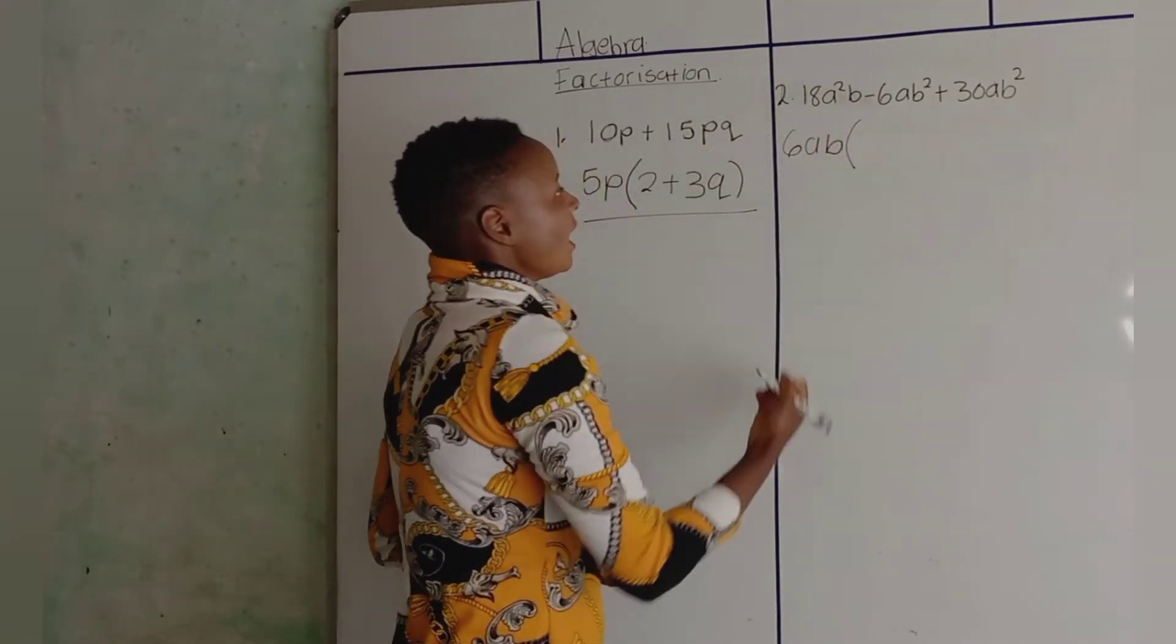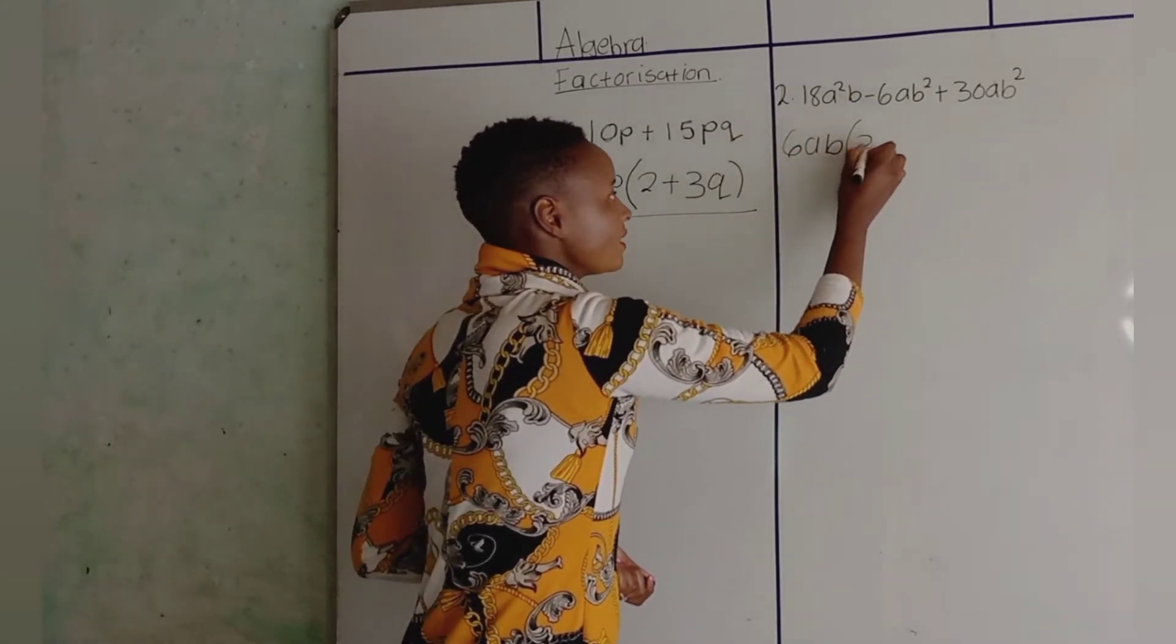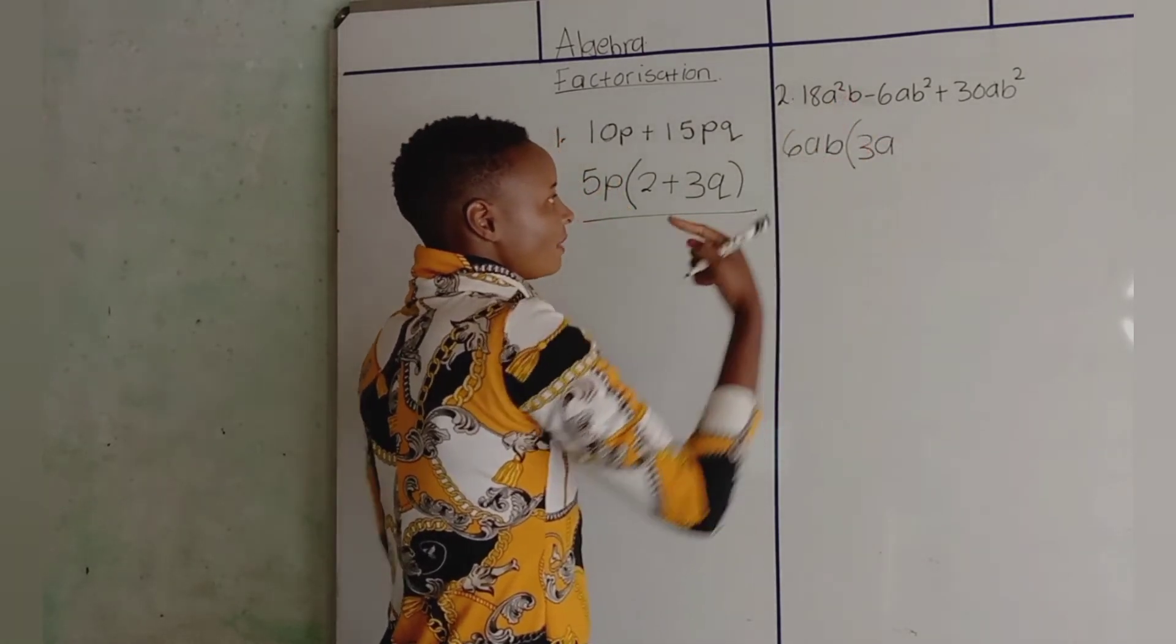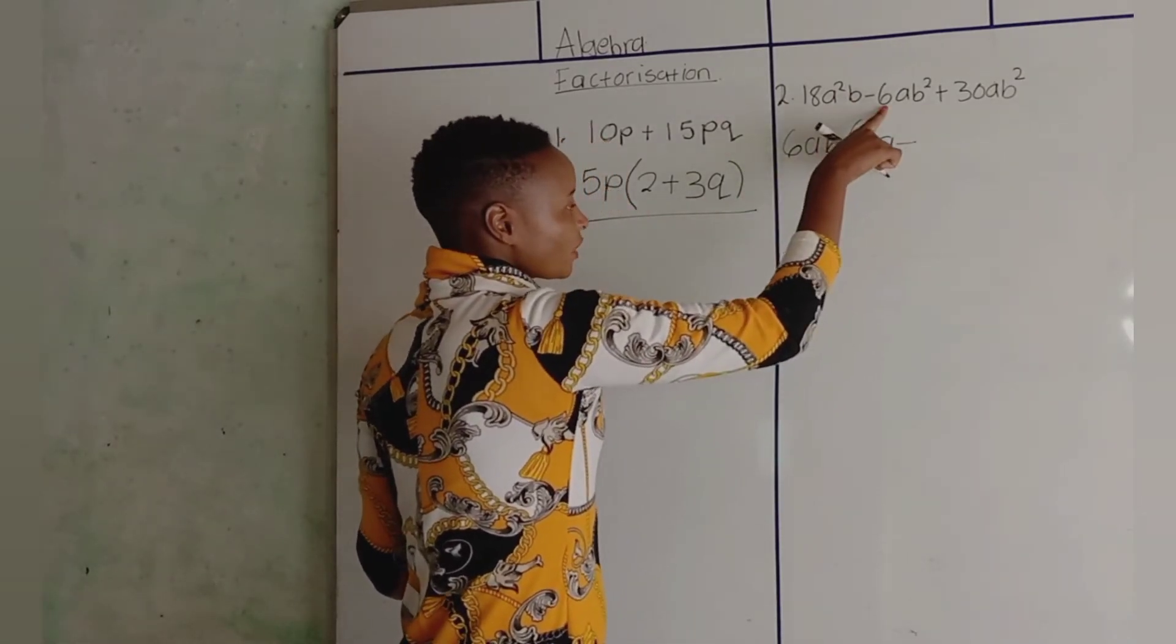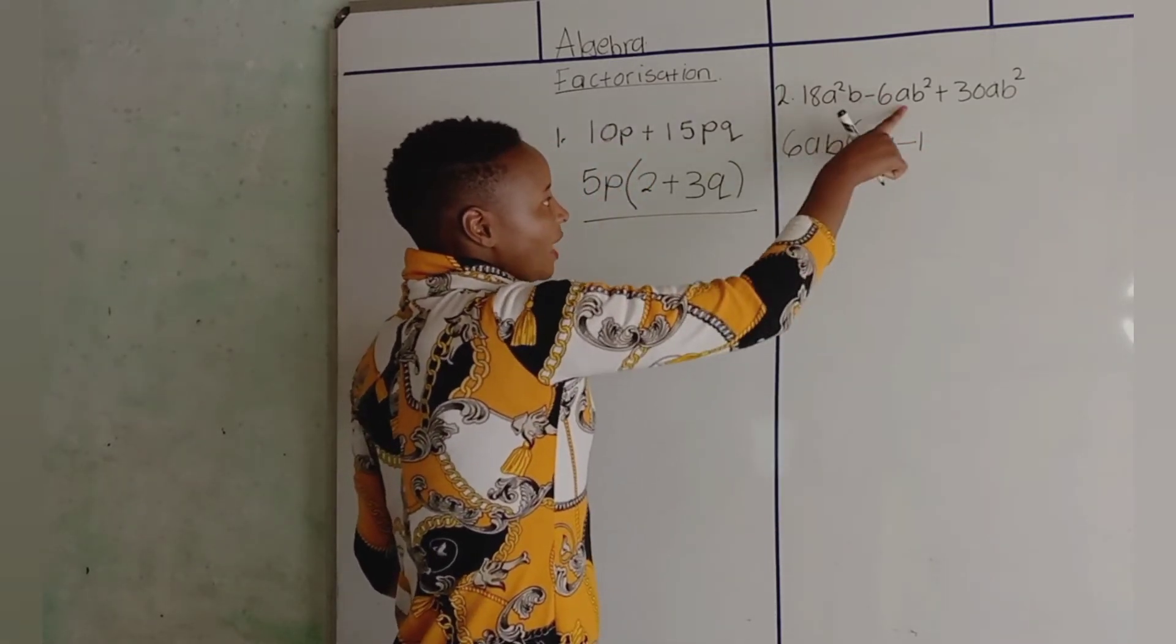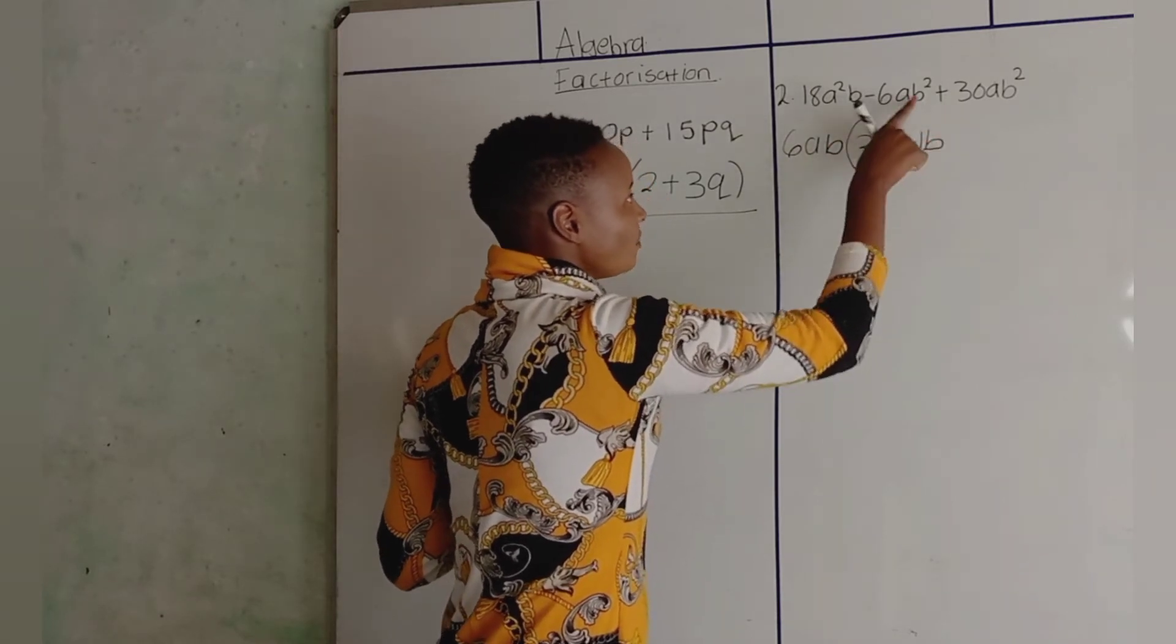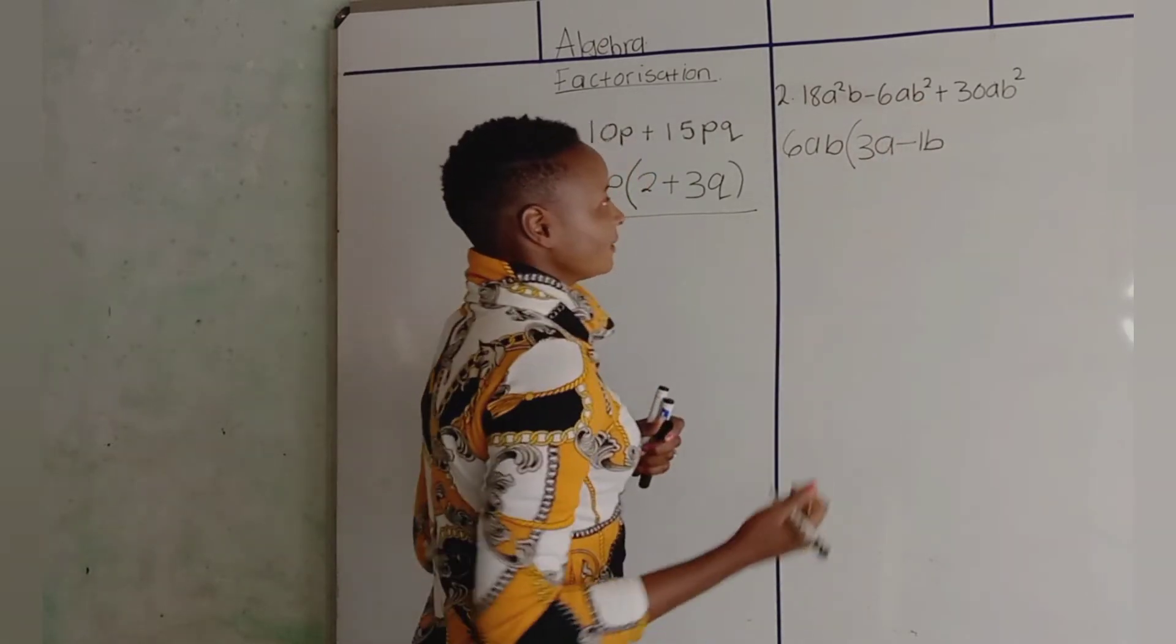Then, we open bracket. Just divide. 18 divided by 6, 3. A squared divided by A, you get one A. B divided by B, they cancel and you're left with nothing. And it's minus. 6 divided by 6 is 1. A and A cancel, you're left with A. B and B squared: B enters B squared, you're left with B.